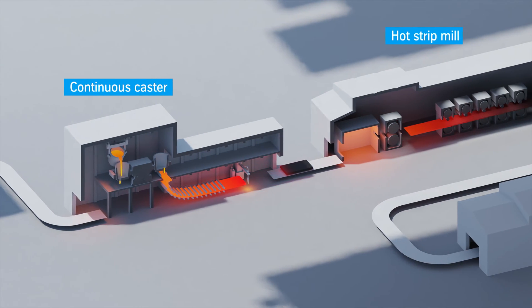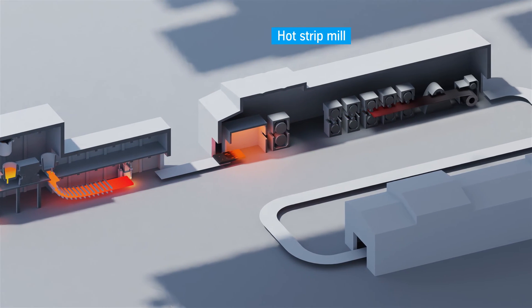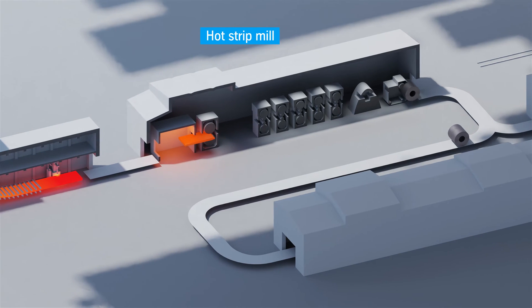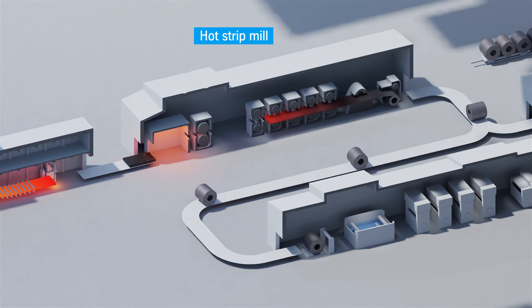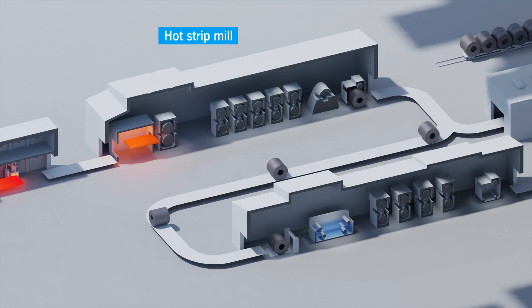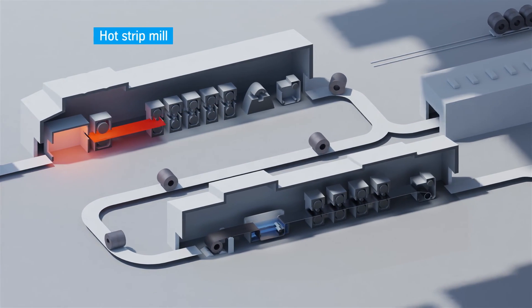The process starts in the hot strip mill. A red-hot slab is rolled down to a thickness of a few millimeters by massive rollers. At the end of the 700-meter mill, the steel strip is cooled with water and given its specific mechanical properties. It is wound into coils and sold as so-called hot strip.